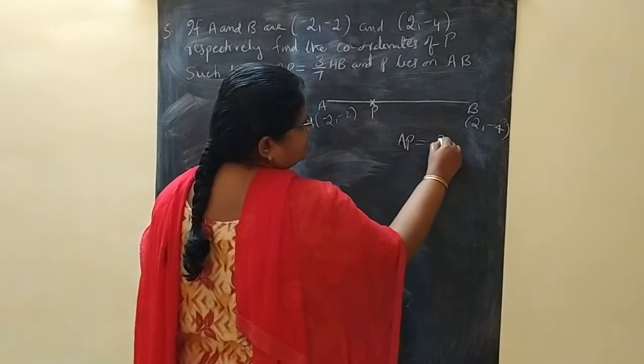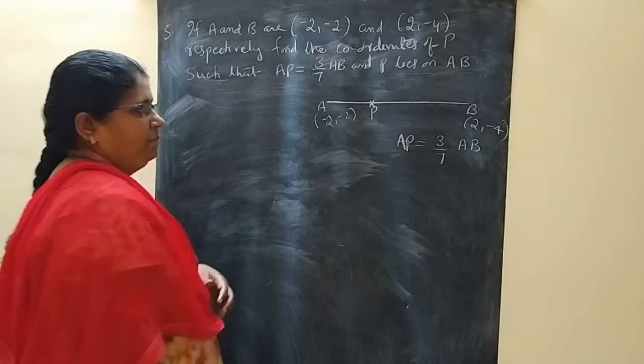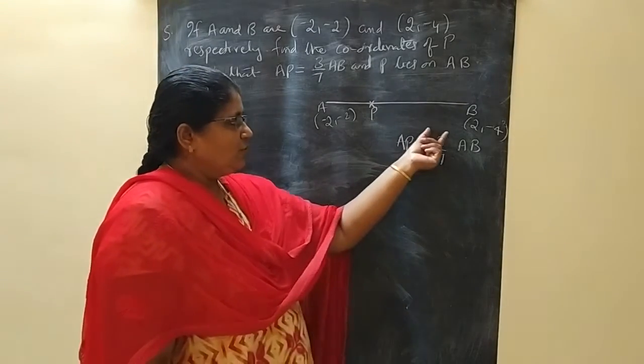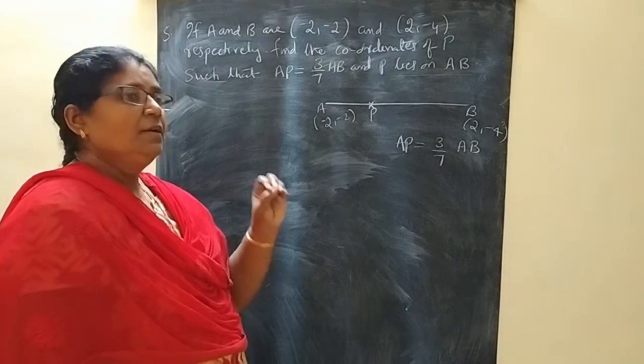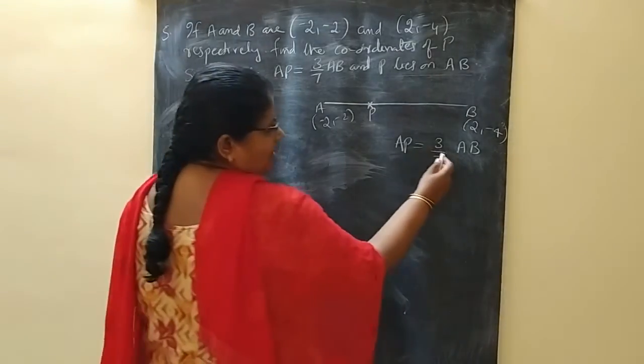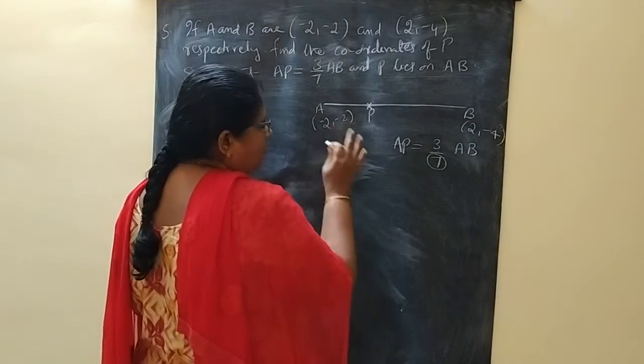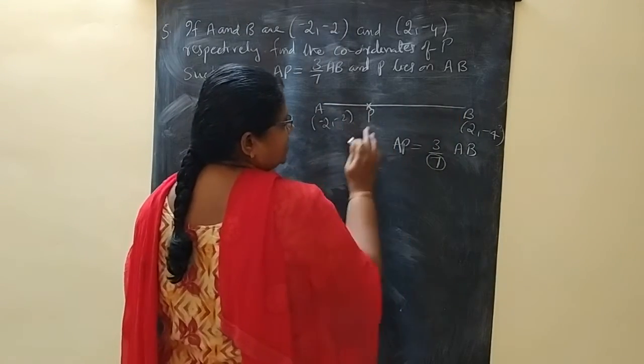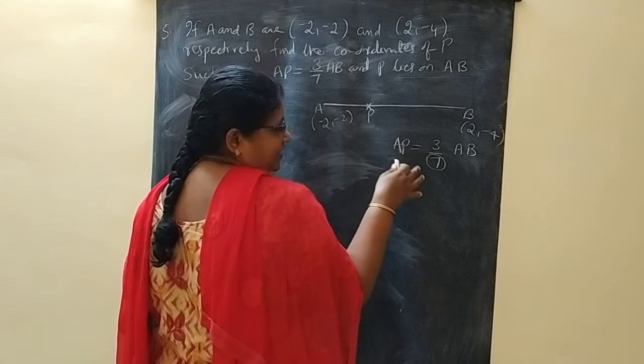AP is equal to 3/7 of AB. What is the meaning of AP equals 3/7 of AB? The meaning is you have to consider this denominator. The total line segment is dividing into 7 parts. That is fraction.